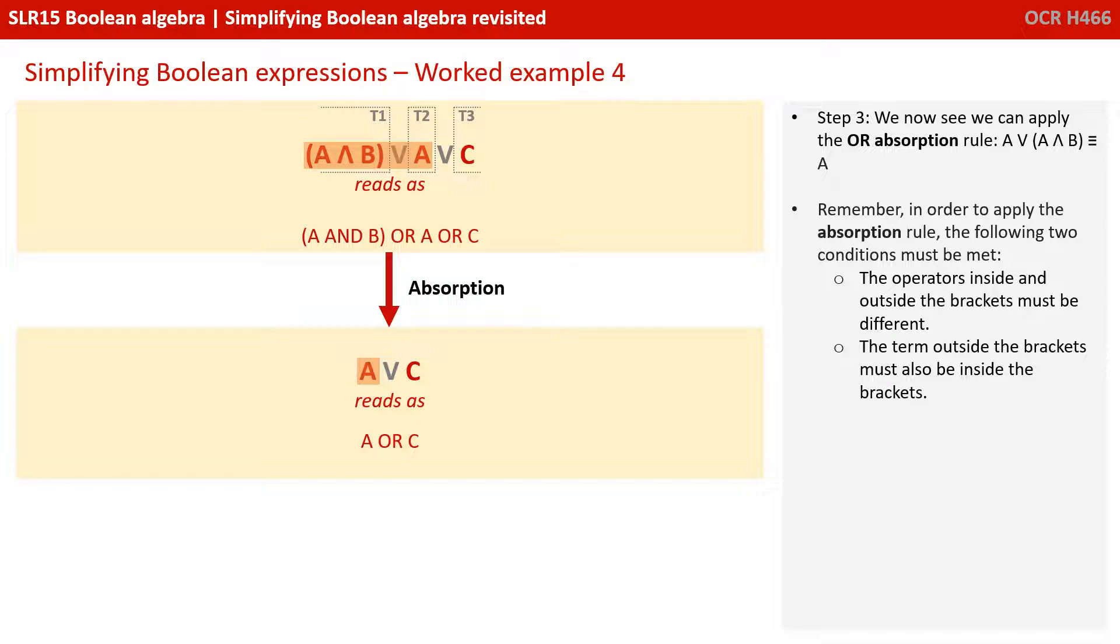Well that's OK, inside in term one we've got an AND symbol and outside between term one and two we've got an OR, so they are. And also the term outside the brackets must also be inside. Well it is, we have both an A inside and outside the brackets. So we can use absorption to reduce terms one and two down to A. And we end up with our simplified expression A or C.